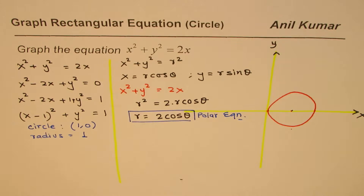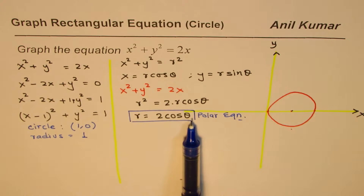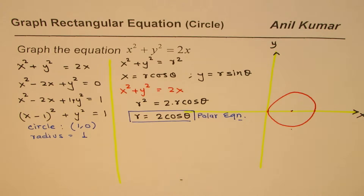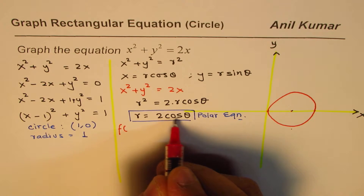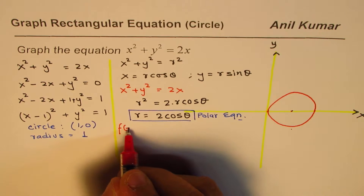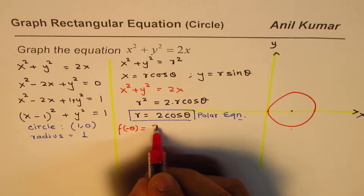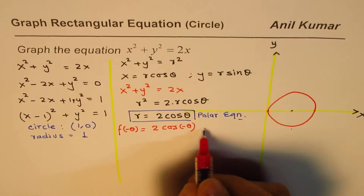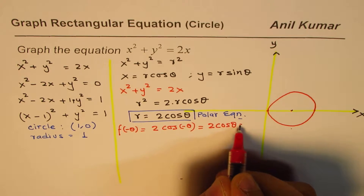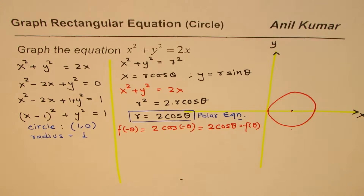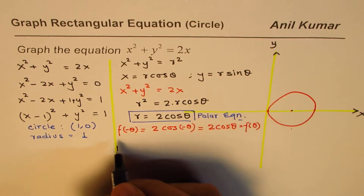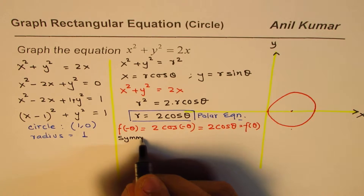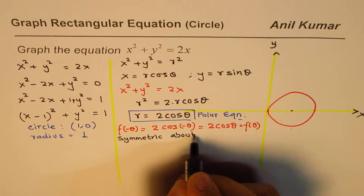From this polar equation we can sketch the same graph. For r equals 2cosθ, the method is to check for symmetry. We know cosine is an even function, so f(−θ) equals 2cos(−θ) equals 2cosθ, which is the same as f(θ). That means this function is symmetric about the polar axis.